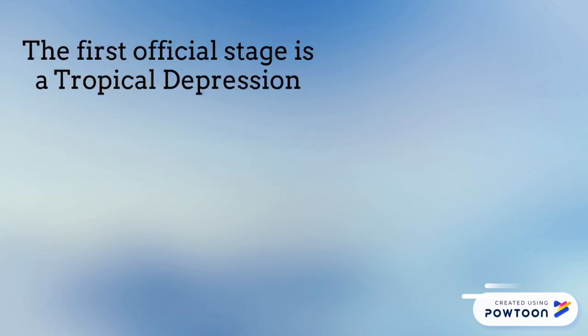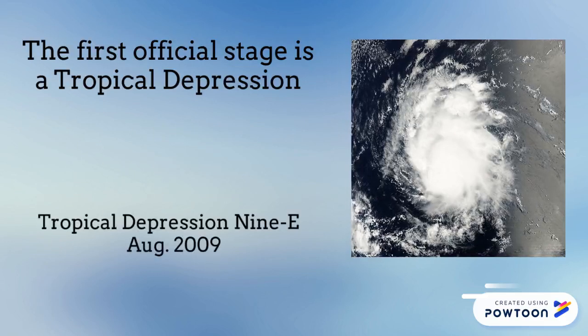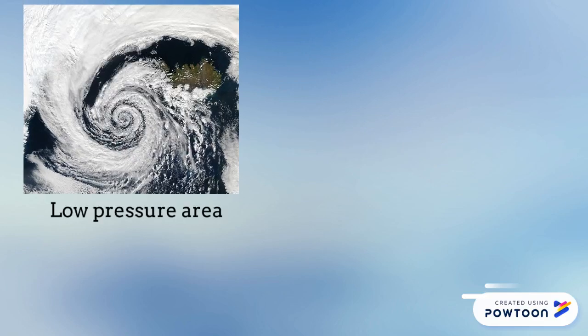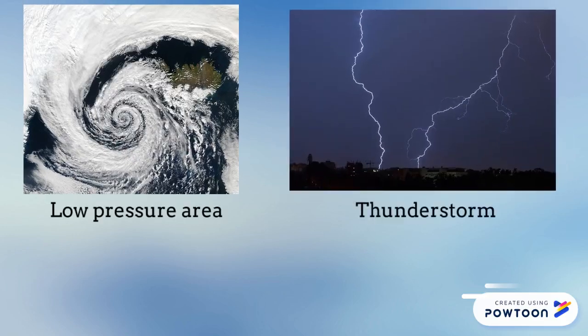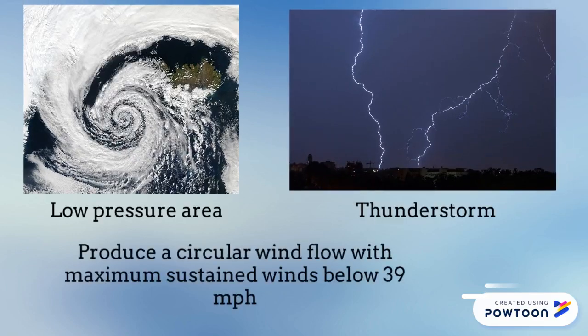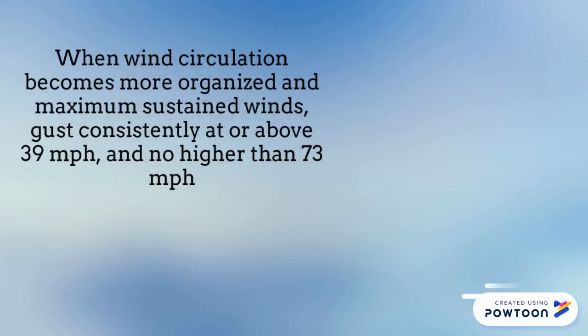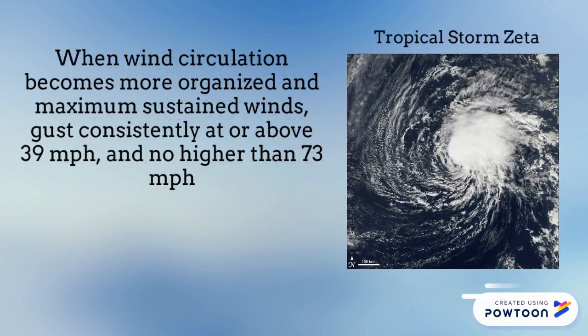The first official stage is a tropical depression. A tropical depression forms when a low-pressure area is accompanied by thunderstorms that produce a circular wind flow with maximum sustained winds below 39 mph.